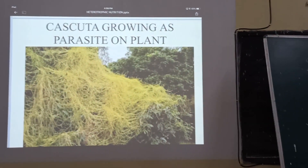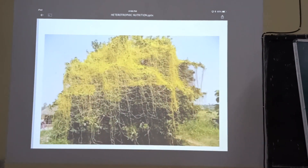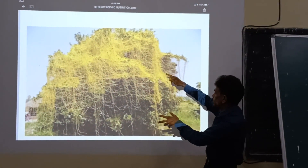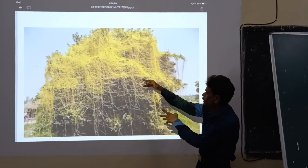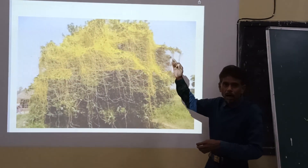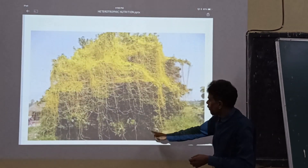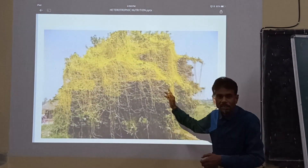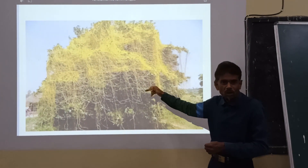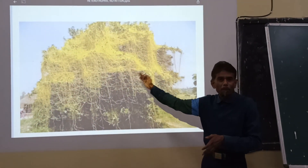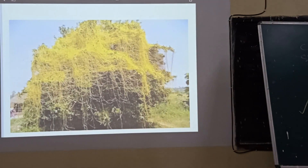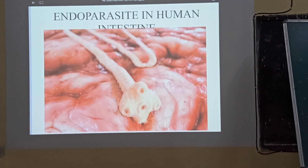In another view you can see how the host plant is almost engulfed by the network mass of the yellow cylindrical thread-like Cuscuta. The host plant's leaves are highlighted in greenish color — the parasite is getting ready-made nutrients from the host body. This mode of nutrition is parasitic mode of nutrition, and here Cuscuta or Amarbel is the parasite.